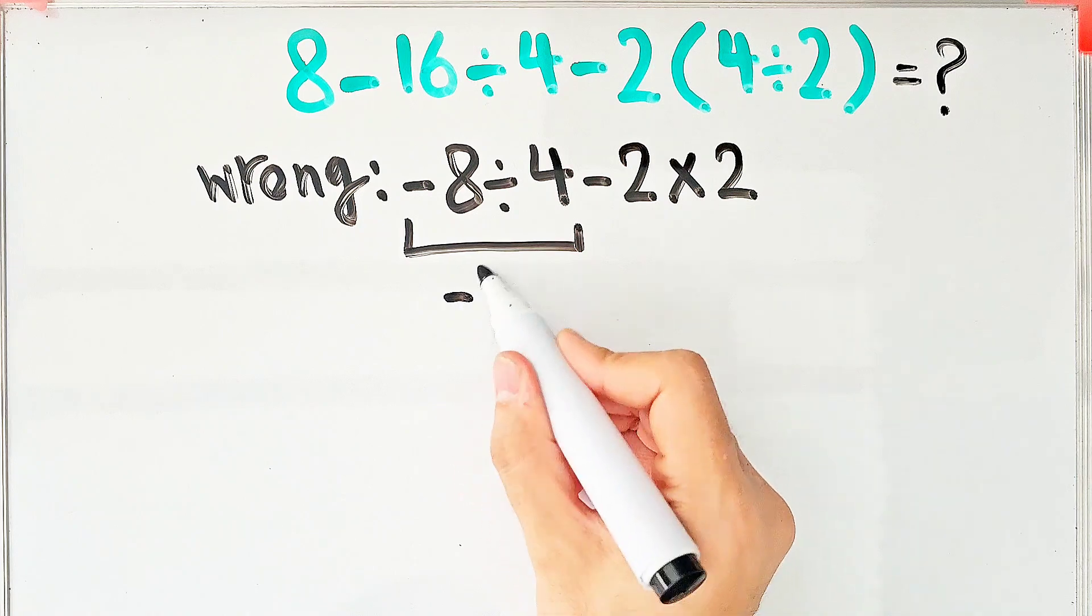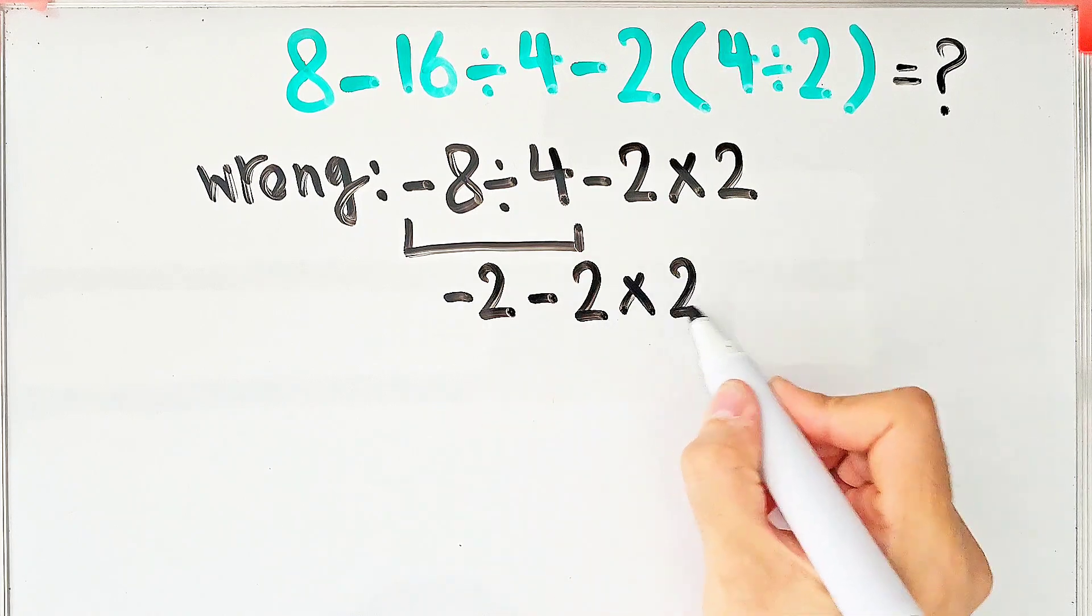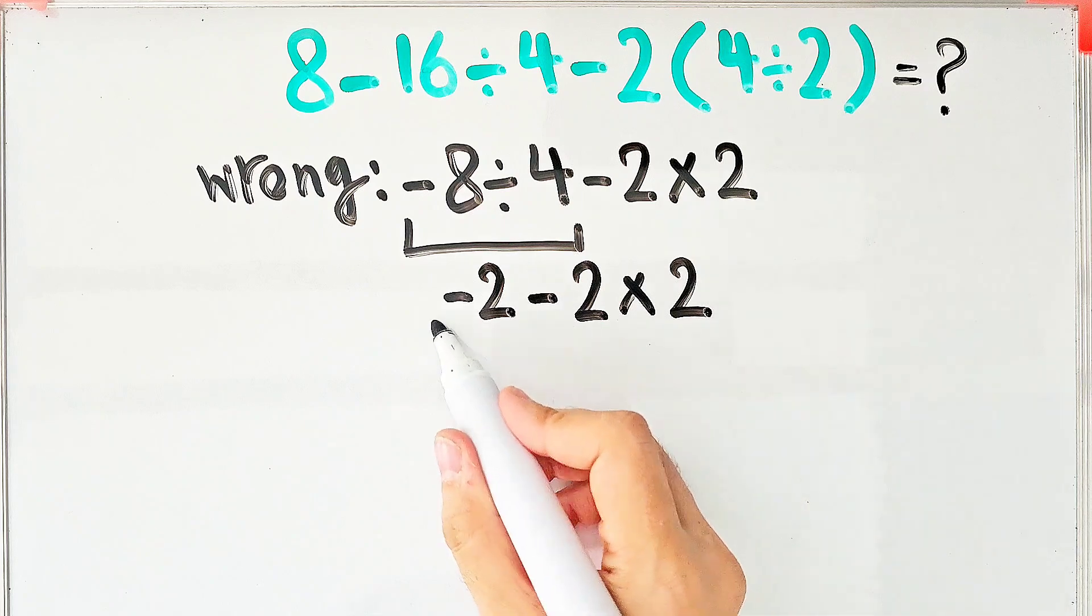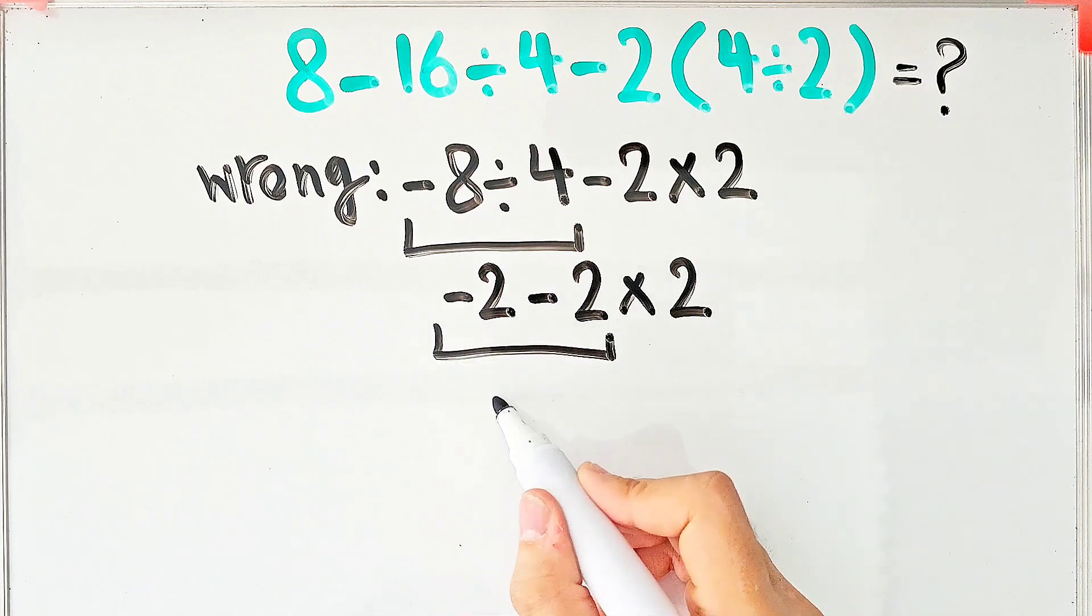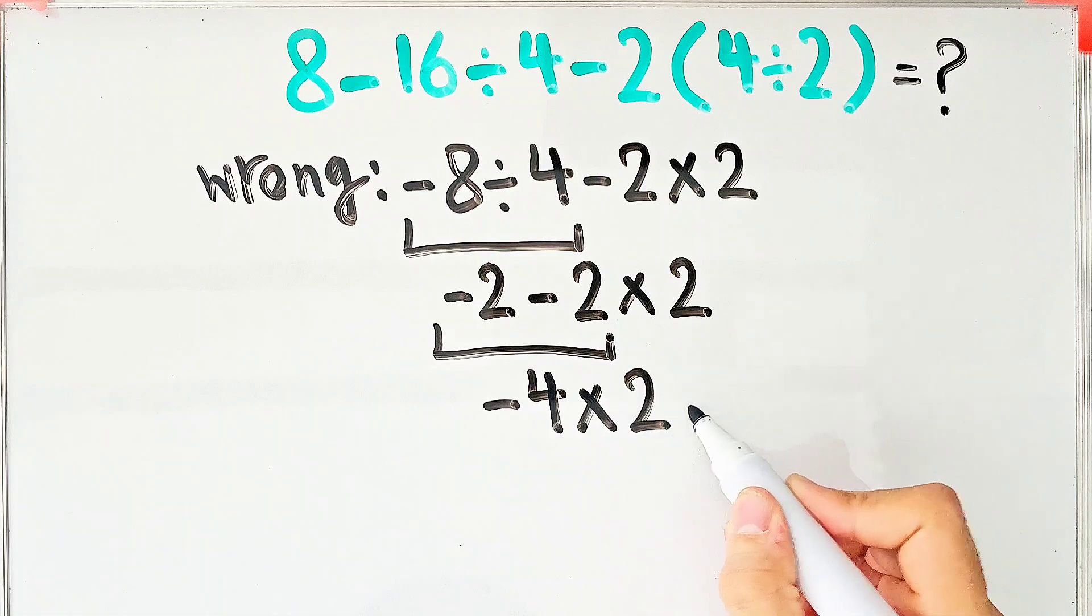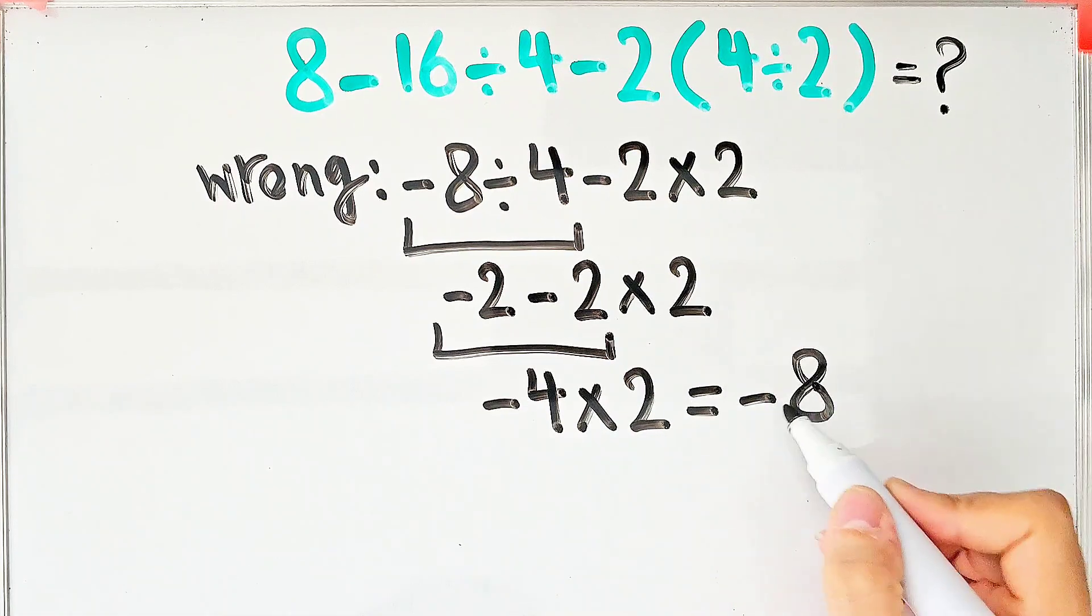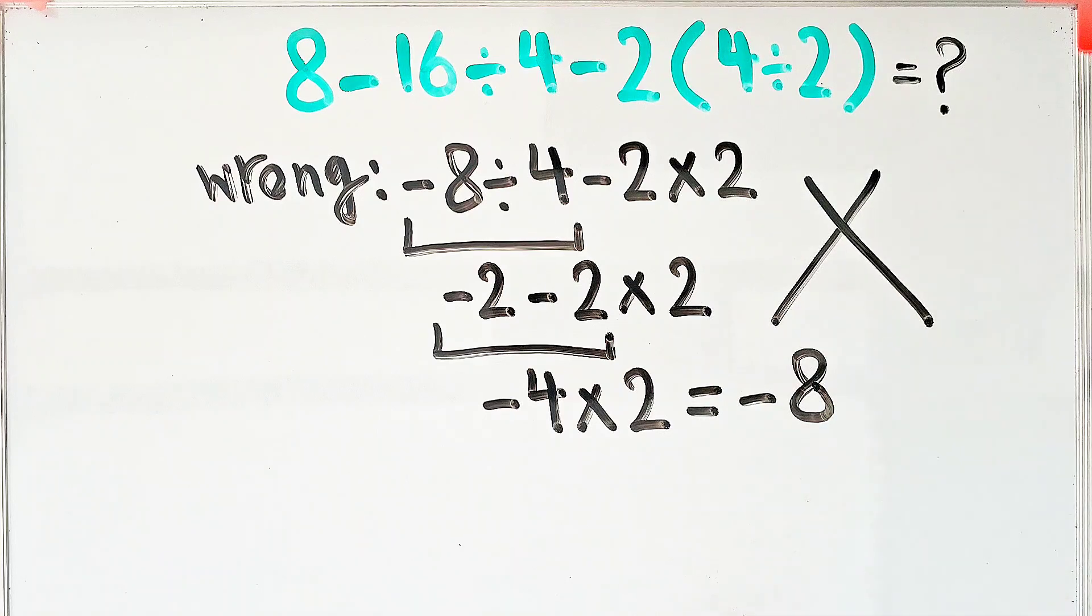Negative 2 minus 2 then times 2. Negative 2 minus 2 equals negative 4 and negative 4 times 2 equals negative 8. They say the final answer of this question equals negative 8 but this answer is wrong.